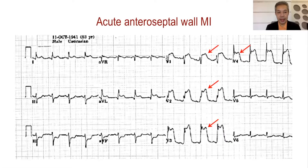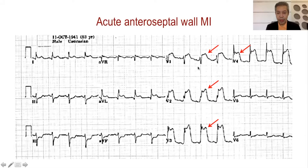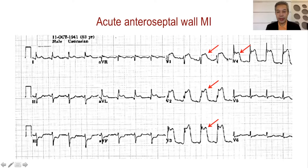In another case showing sinus rhythm with upright P waves followed by a narrow QRS, once you see ST elevation in V1, V2, V3, and up to V4, this represents septal and anterior — anteroseptal wall ST segment elevation with no Q waves yet. Looking at leads 2, 3, and AVF, there are reciprocal or mirror changes; we do not treat this as inferior wall ischemia.